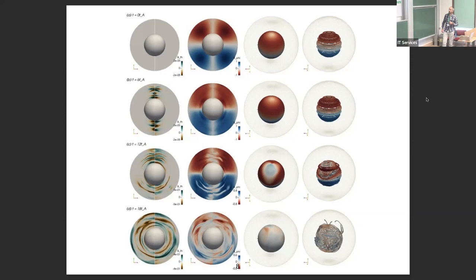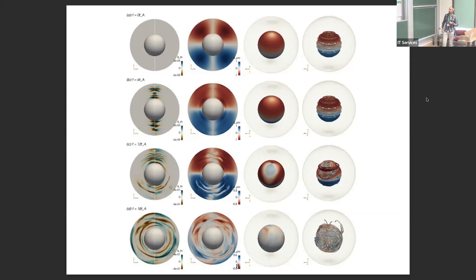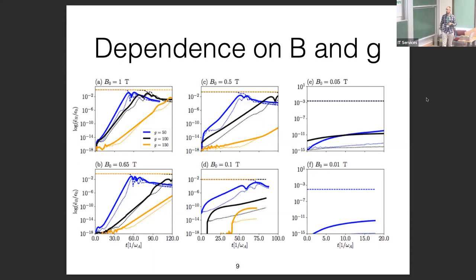Looking at the evolution of all modes in detail, for six different realizations of initial field strength each with three different values of gravity: when gravity is increased, the growth rate in the linear phase decreases a lot. The m=1 and m=2 modes clearly show that when the field strength decreases, the growth rate also decreases — this is expected, but I believe this may be one of the first times it is done with an anelastic code for this field configuration in a stably stratified environment.